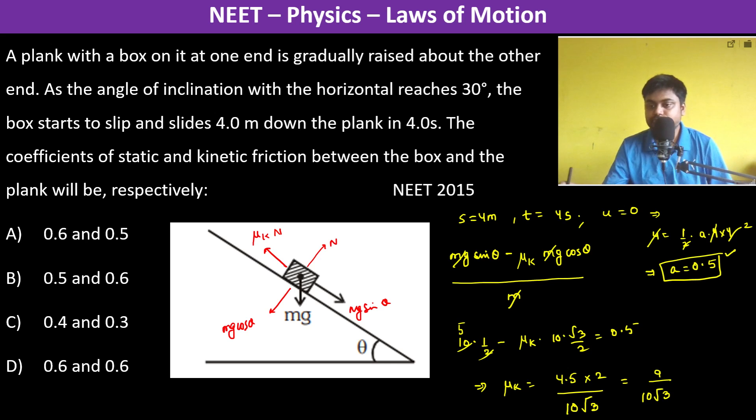So this is 9 divided by 10 root 3. So this is 0.9 divided by 1.7, which is approximately 0.5. So therefore the best suited answer is going to be A: 0.6 and 0.5.